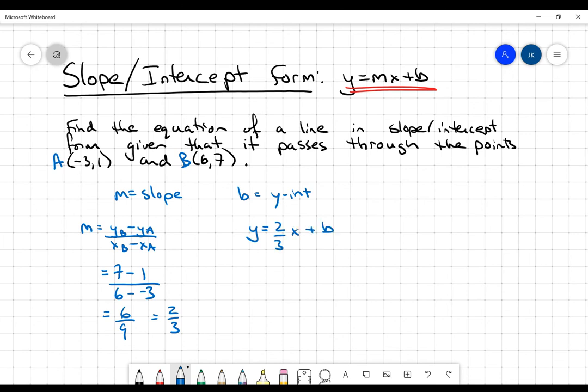Now what I don't know is b. But I do have the ability to do some work with this because I have two points. I have an x value and a y value for each. So let's just choose point a.